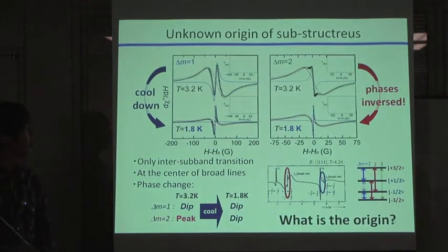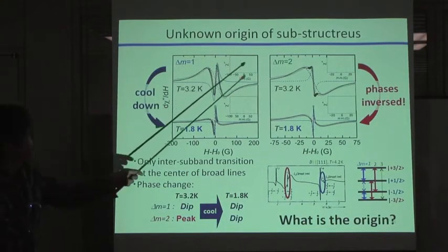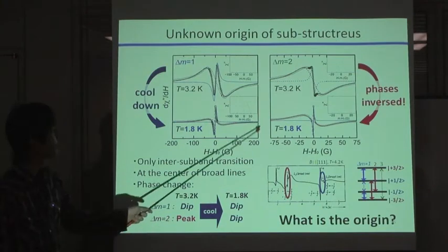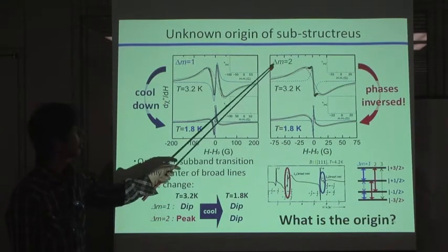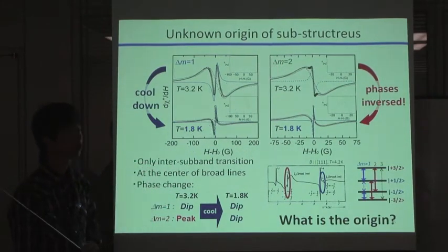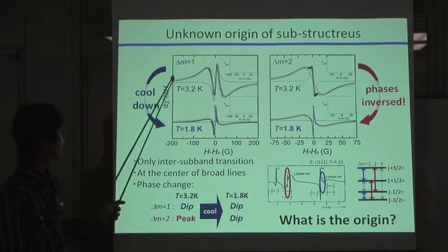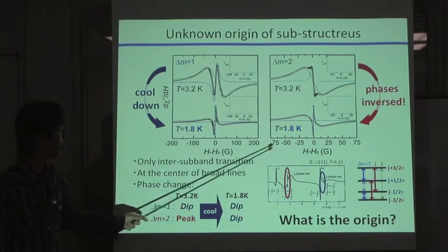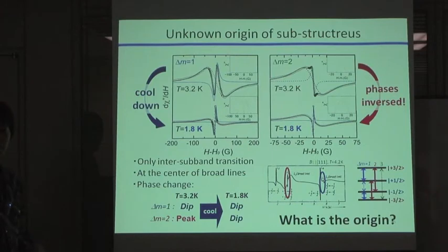Here you can see four EPR spectra measured with silicon-28 samples. The left figure is delta M equal to 1 inter-subband transition, and the right figure is delta M equal to 2 inter-subband transition. The upper two figures are measured at 3.2 Kelvin, and the lower two figures are measured at 1.8 Kelvin.